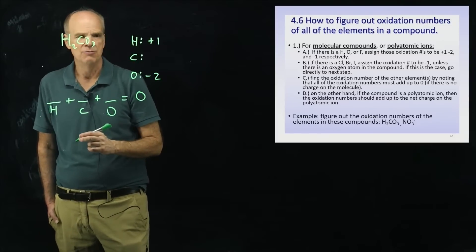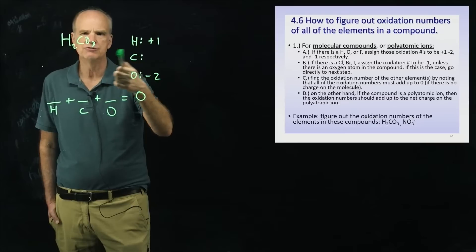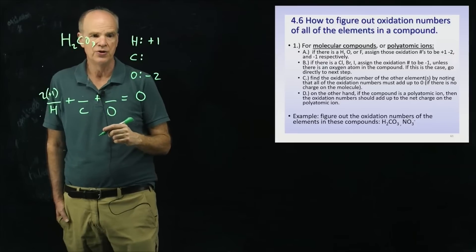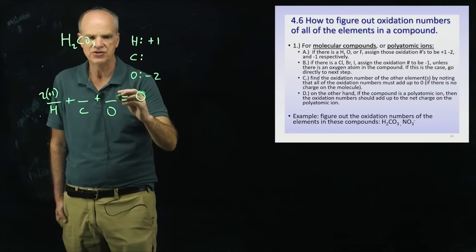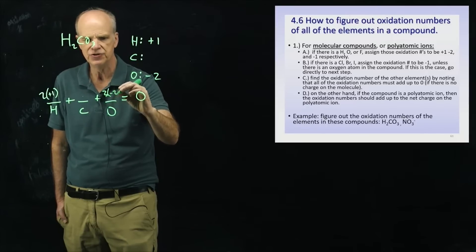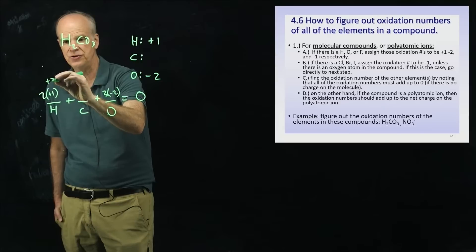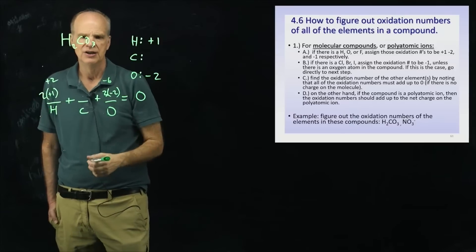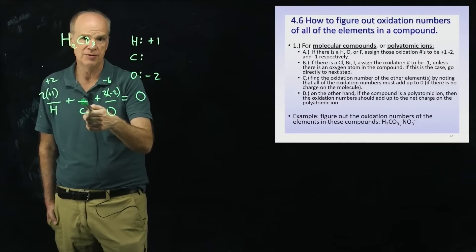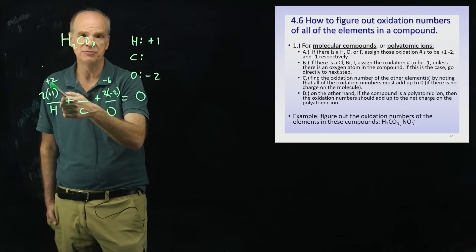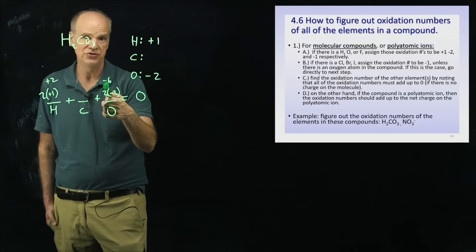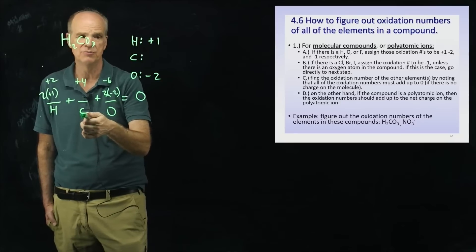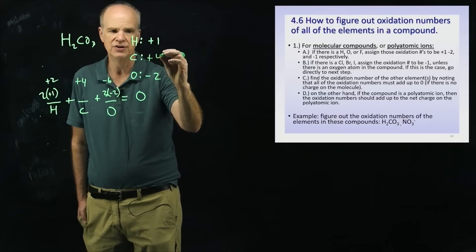What is the total oxidation number contributed by two hydrogens? It's two times positive one, which is plus two. The total from three oxygens is three times negative two, which is negative six. So the question is: what must carbon's oxidation number be so that when added to plus two and negative six, you get zero? Carbon must have an oxidation number of plus four.